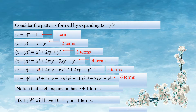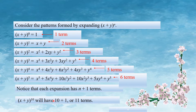Here is 4 terms, here is 5 terms, here is 6 terms. Generally, x plus y all raised to n has n plus 1 terms. And here x plus y all raised to 10 has 10 plus 1 = 11 terms.